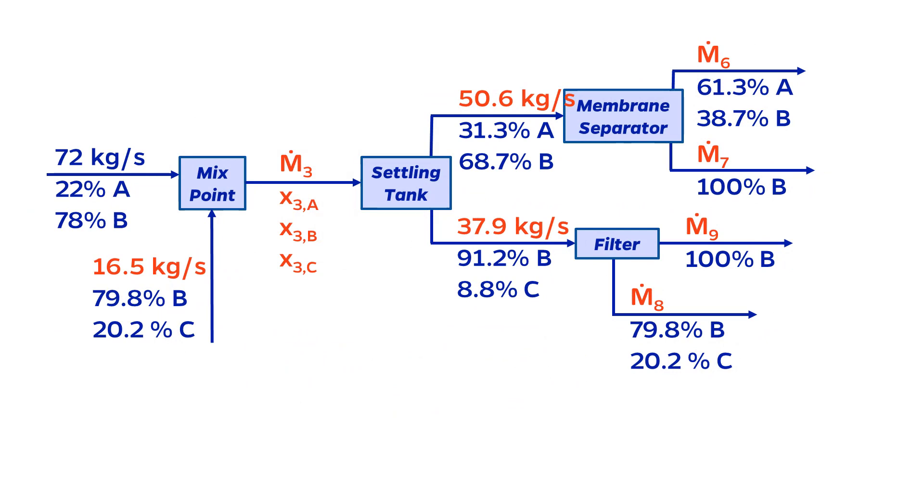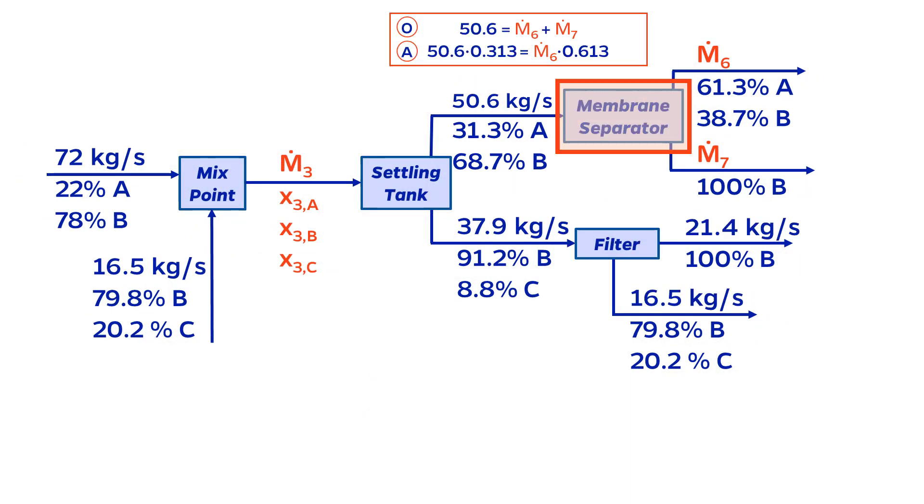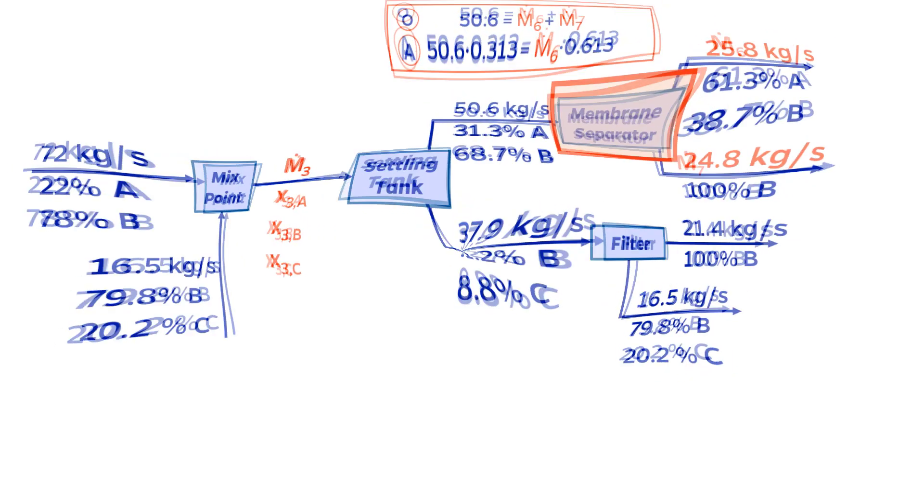If I go back and revisit the filter system, I now have new information that I didn't have before. The incoming flow rate being 37.9 kilograms per second is enough to solve. I can do something similar with the membrane separator. Note that I'm not showing the degree of freedom again, but I've mentally confirmed that all these systems are now appropriately specified. Now we are on a roll.